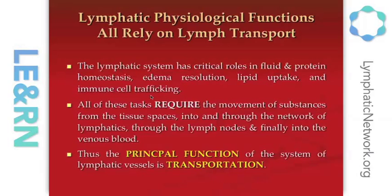The lymphatic system has critical roles in fluid and protein homeostasis, edema resolution — discussed historically for over 50 years — and lipid uptake, since the vast majority of lipids absorbed through the gut are taken up first into the lymphatics. It's also critical for immune cell trafficking. All these tasks require movement of substances from tissue spaces into and through the network of lymphatics, through lymph nodes, and finally into venous blood. Classically we looked at the lymphatic system's principal function as a transportation system to take important elements from tissue spaces to the nodes and eventually to blood.